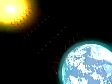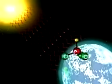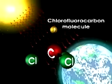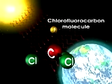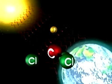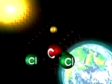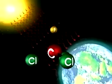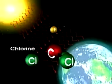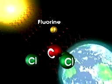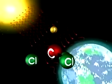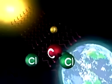A group of gases called chlorofluorocarbons, or CFCs, may pose a threat to the ozone layer. Chlorofluorocarbons are chemical compounds made up of atoms of chlorine, fluorine and carbon. CFCs are used as refrigerants and to make plastic foam insulation.